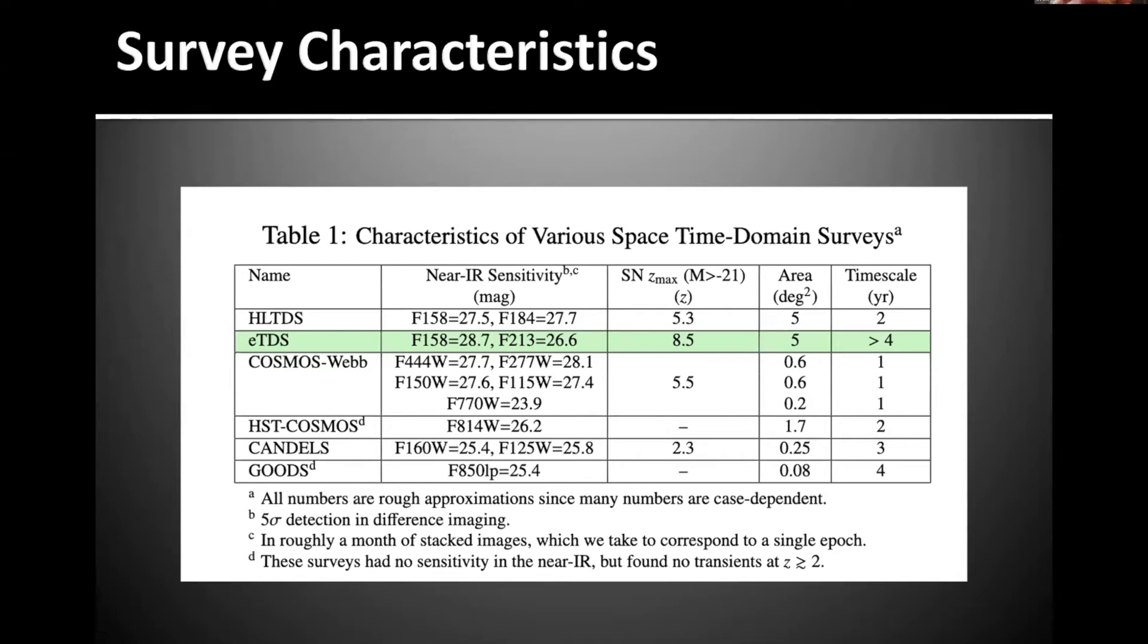It's important to point out, we call this the Extended Time Domain Survey because we're hoping that it extends the currently planned High Latitude Time Domain Survey in wavelength out to F213, Takashi made that very clear, out in redshift reach, supernovae out to about redshift of eight. We have a large five-square-degree field, and also extended in timescale from about two to four years. The bottom line is it creates this unprecedented survey unmatched in the total combination of all these parameters.